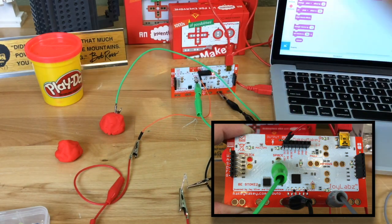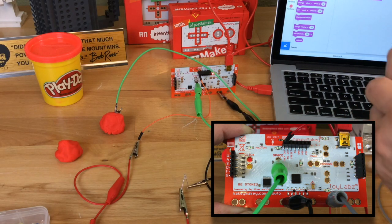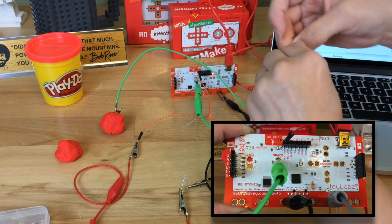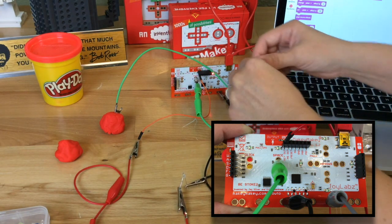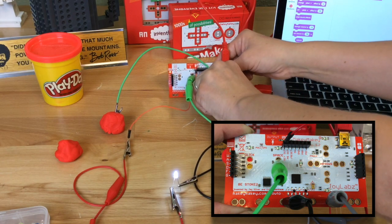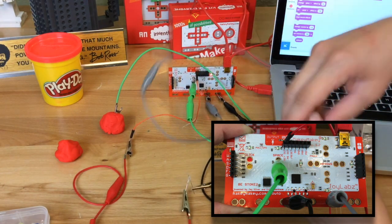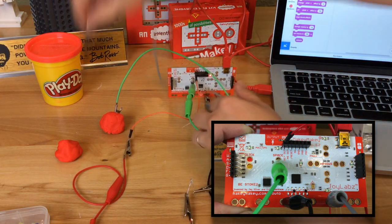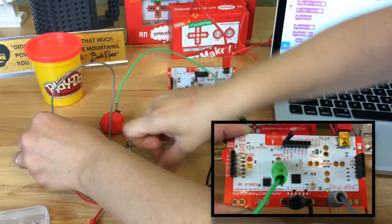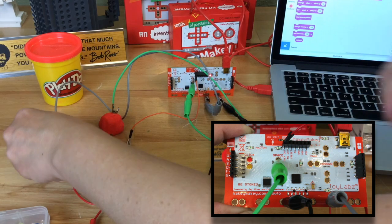I'm going to put one end into the Play-Doh, and then I'm going to take another alligator clip to Earth and put that into Play-Doh. And now I've got a simple Play-Doh switch.